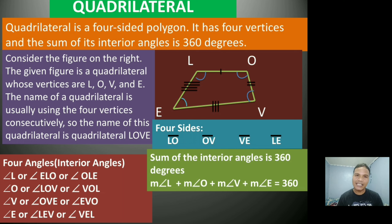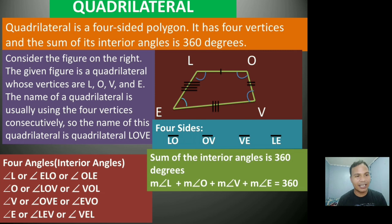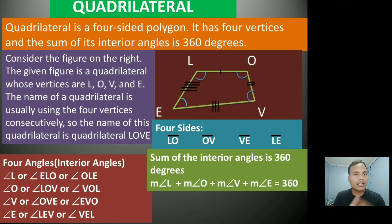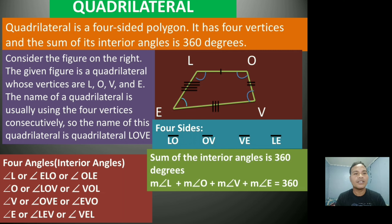Since a quadrilateral is a four-sided polygon, we also have four angles. These four angles are called interior angles. If you observe in our figure, the curve that is colored blue symbolizes an angle, so we have four angles there.